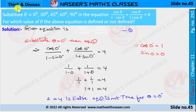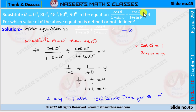Now we are going to solve Think and Discuss, page number 292, chapter 11, trigonometry. Substitute theta as 0 degrees, 30 degrees, 45 degrees, 60 degrees, and 90 degrees in the equation: cos θ / (1 − sin θ) + cos θ / (1 + sin θ) = 4. For which value of theta is the above equation defined or not defined?